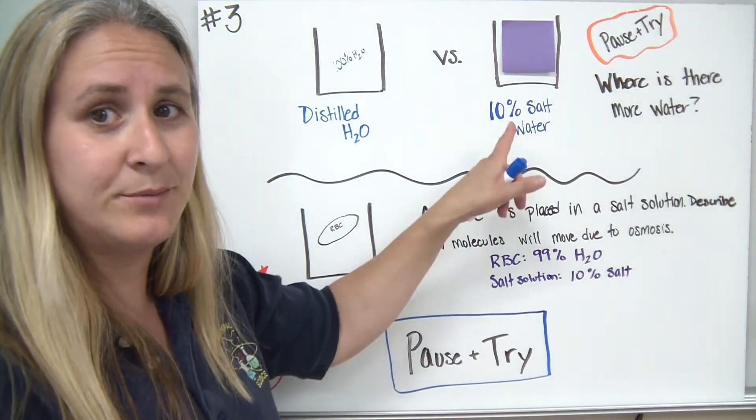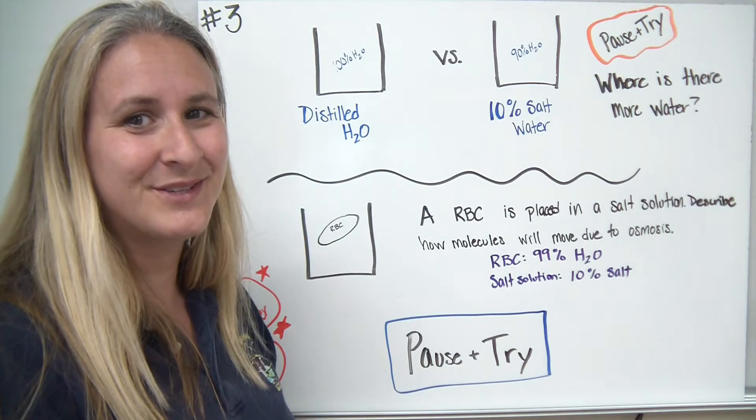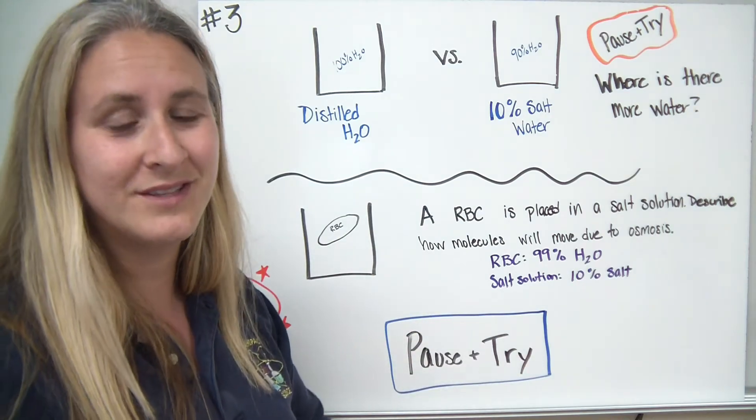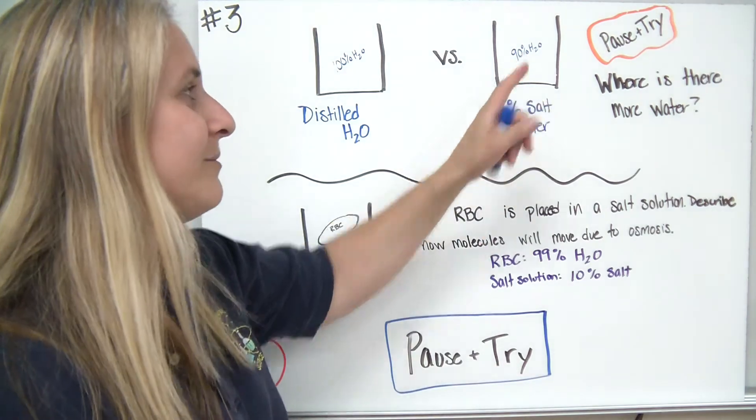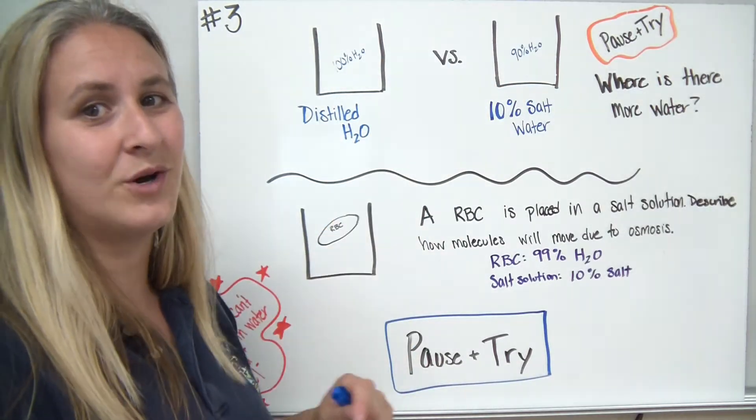Now for the 10% solution of water, I gave away the answer. The 10% salt solution would have 90% water in it. We're going to assume that the salt was dissolved in water to make our solution. So which one has more water? The distilled water solution.